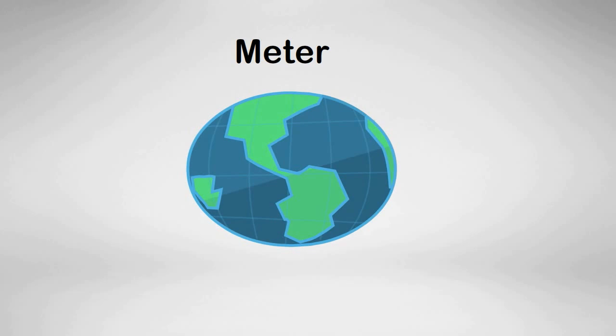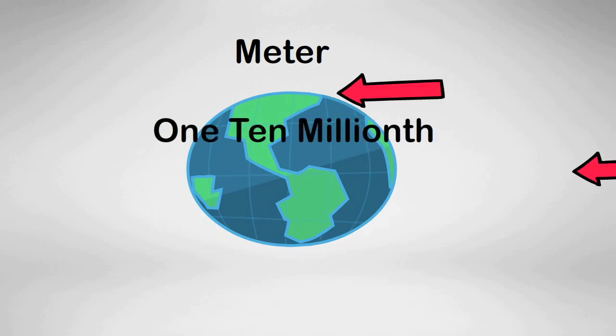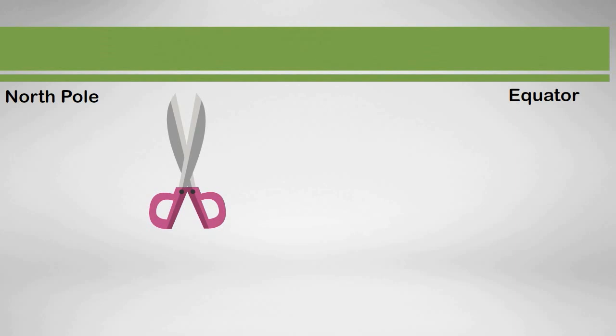All three of these base units are related. A meter is 1 ten millionth the distance from the North Pole to the equator on a meridian that passes through Paris. If you take this distance and divide it into 10 million small segments, you get a meter.